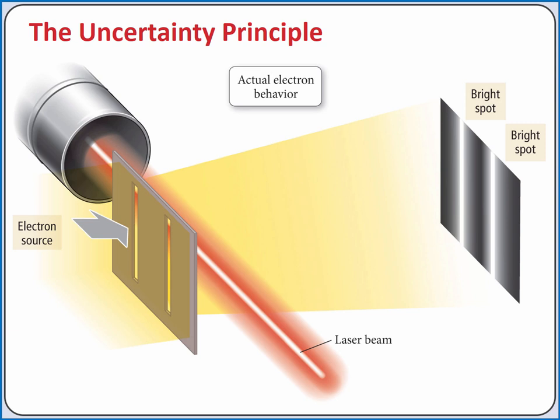What's even more interesting is if we add a laser on the other side of the slit, we get different results. The laser will allow us to observe the electron after it passes through the slit. As the electron crosses the laser, it scatters a photon and we see a flash. This flash allows us to tell something about the electron's position.